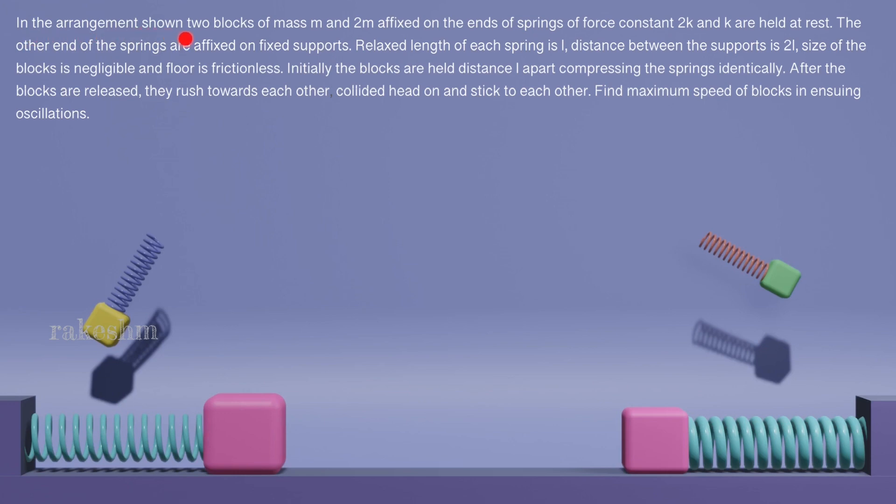In the arrangement shown, two blocks of masses m and 2m are fixed on the ends of springs of force constant 2k and k and are held at rest. So these are the two blocks. This is of mass m. This spring is of spring constant 2k and this is of mass 2m and this is of spring constant k.